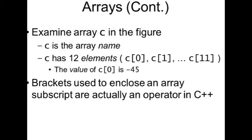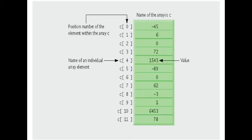This figure shows c has 12 elements: c of 0, c of 1, c of 2, c of 3, c of 4, c of 5, and so on. The value of c[0] is -45, c[1] is 6, c[2] is 0, c[3] is 72.